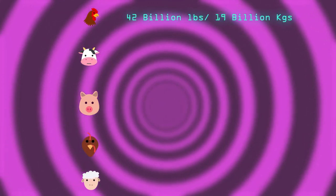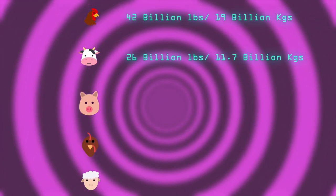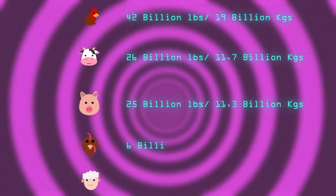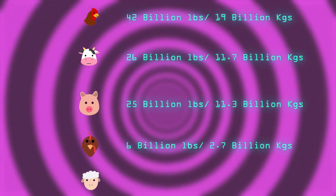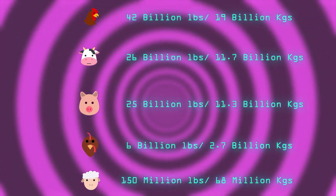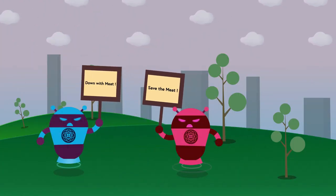This accounted for over 42 billion pounds of chicken, 26 billion pounds of beef, 25 billion pounds of pork, 6 billion pounds of turkey, and 150 million pounds of lamb and mutton.